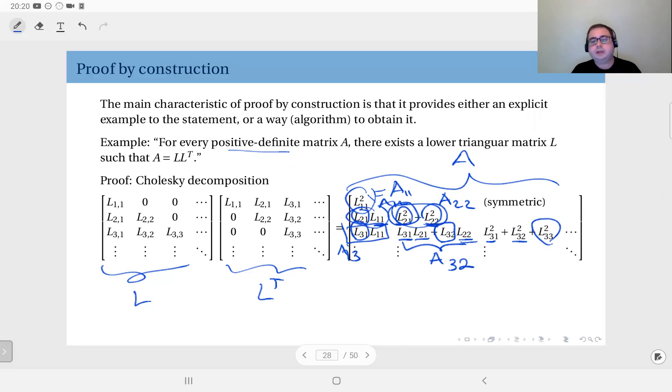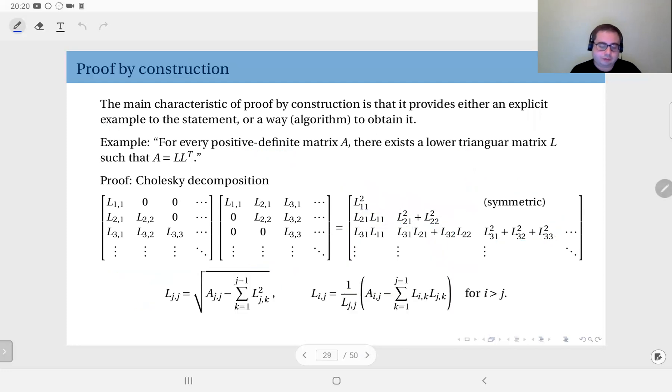So there is a pattern here. From this I can find this, from this I can find this. It's possible to actually write down an algorithm that will do this procedure. So this is a proof by construction. Here you see the actual expressions that you can use to write an algorithm to obtain the Cholesky decomposition of a given positive definite matrix.